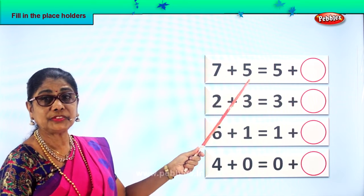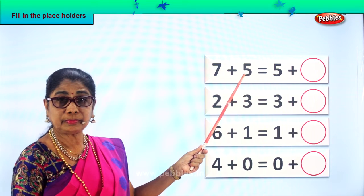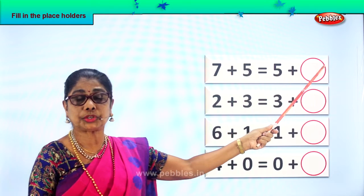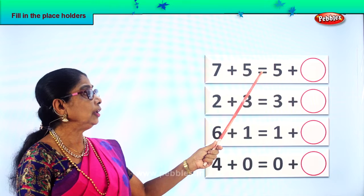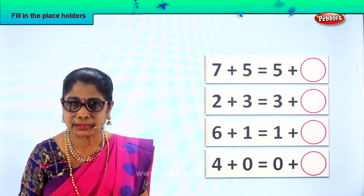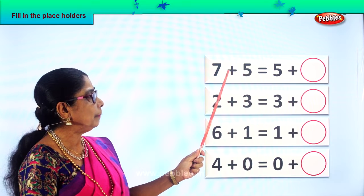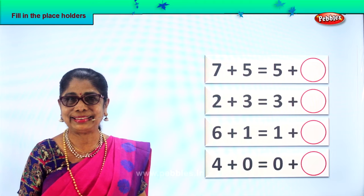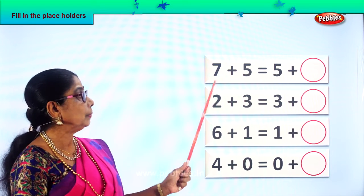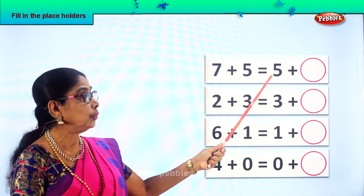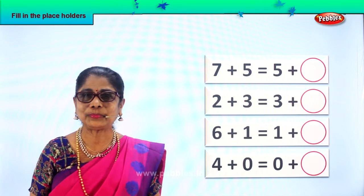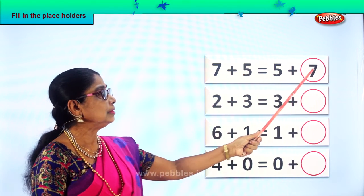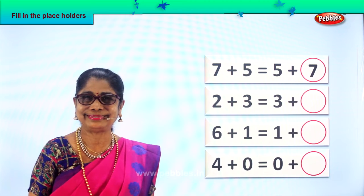Here we have: seven plus five. Seven plus five is equal to five plus what? Seven plus five equal to five plus what? Look at the pattern — you have seven plus five, and the five is here. What number could be there? Certainly seven! It's very easy, logical, interesting. Seven plus five is equal to five plus seven. Yes, seven is the answer.